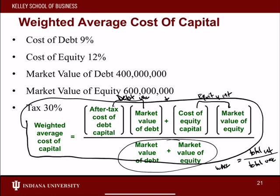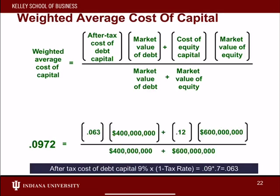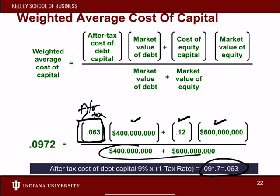Let's plug in some numbers: 9% cost of debt, 12% cost of equity, 400 million in debt, and 600 million in equity. An important detail — this is after-tax — so cost of debt is multiplied by (1 minus tax rate). The cost of equity times market value of equity over total market value is also included. This gives us roughly 6.3% after-tax interest on debt and 12% on equity, averaging to about 9.7% interest overall.